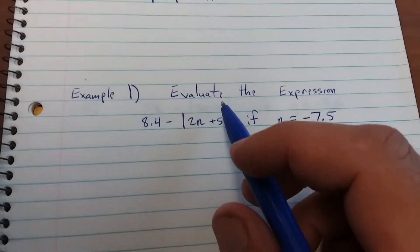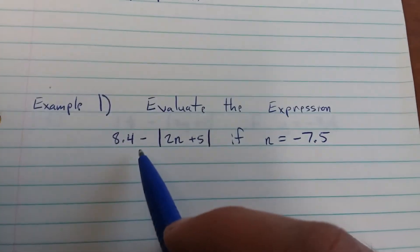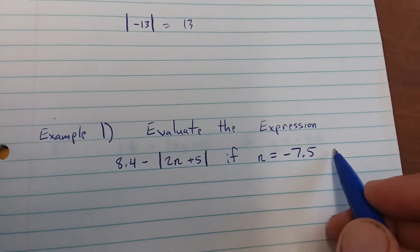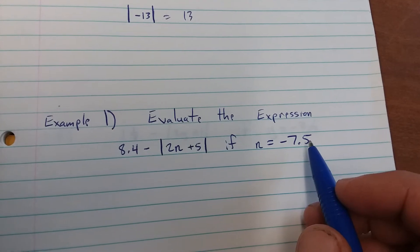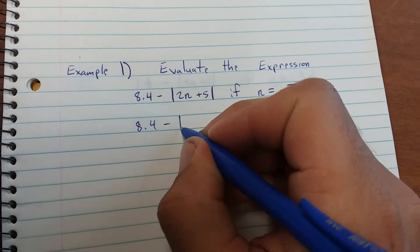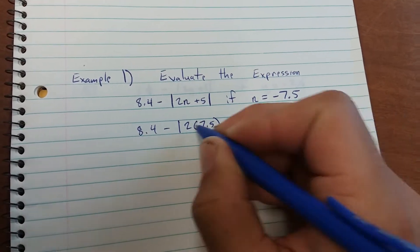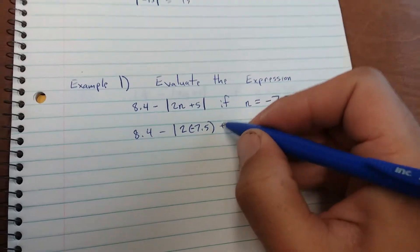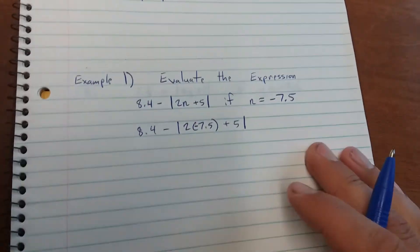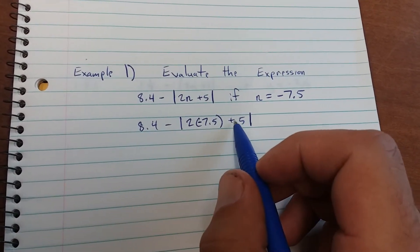Alright, let's look at this example. Evaluate the expression 8.4 minus the absolute value of 2n plus 5 if n equals negative 7.5. So we're going to replace n with negative 7.5 and solve it. So we have 8.4 minus 2 times negative 7.5. So we have 8.4 minus 2 times negative 7.5 plus 5 and take the absolute value of that. So we have to solve inside the absolute value sign first.